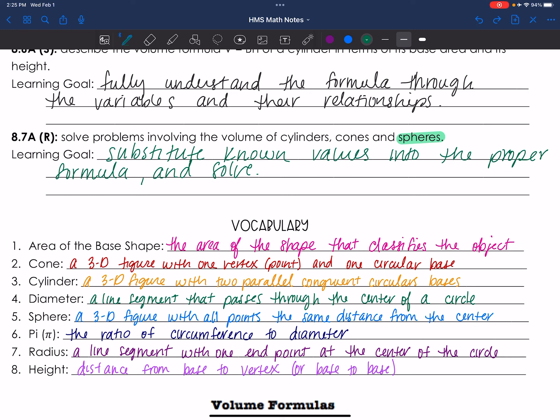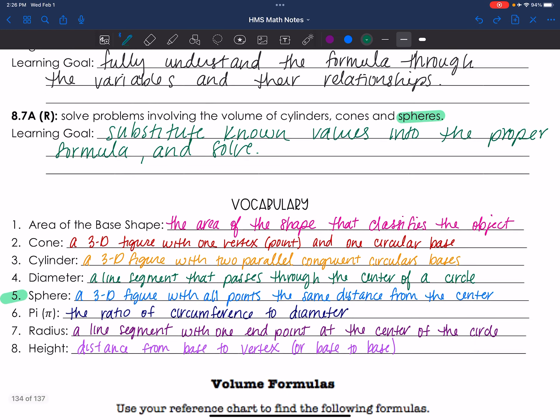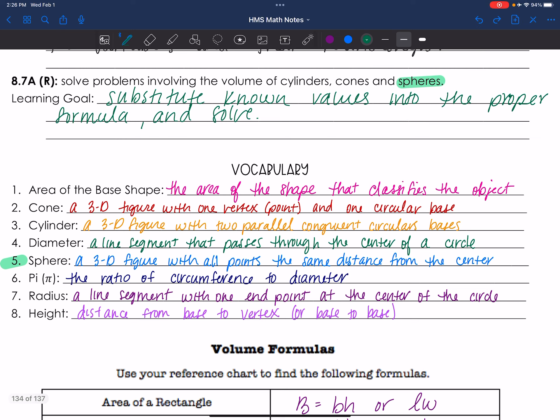So we're going to substitute in known values into the proper formula for a sphere and solve. Our last vocab, I'm sure you've already filled in, but I just want to point out, is sphere, a 3D figure with all points the same distance from the center. So they're equal distance from the center point, which makes a perfect sphere.